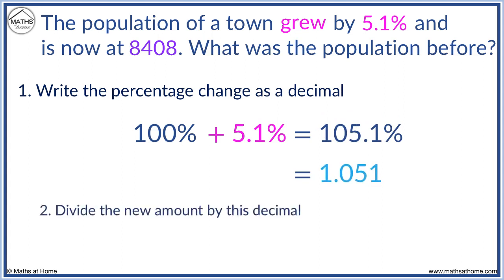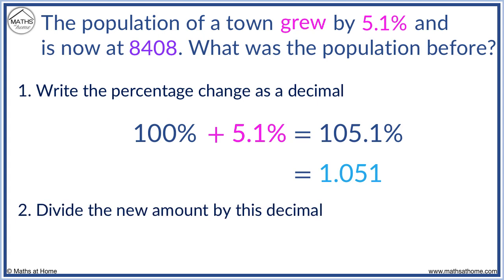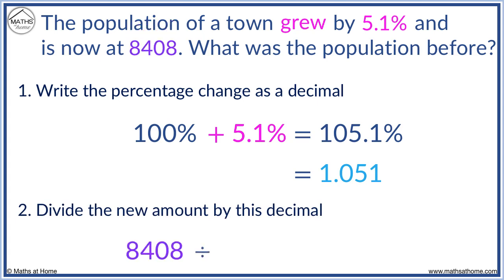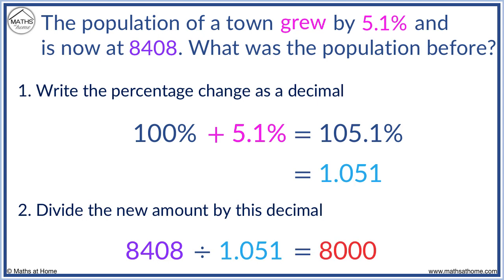We divide our new amount of 8,408 by 1.051 to get 8,000 people. There were 8,000 people before the population grew.